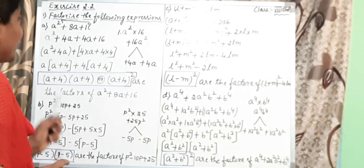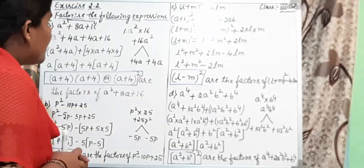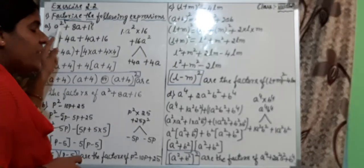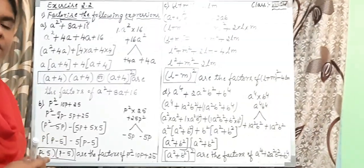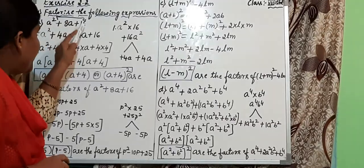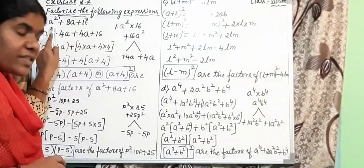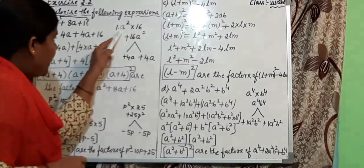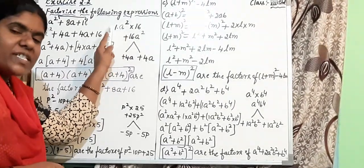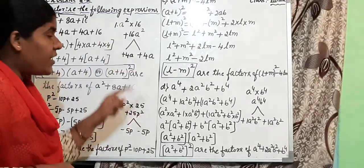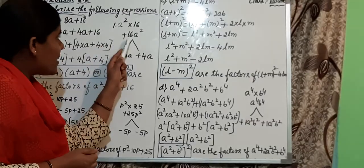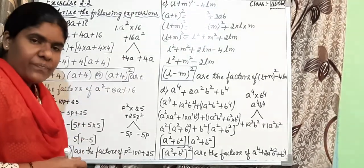Observe carefully children. Here some algebraic expressions are given; using these expressions you find out the factors. The first question is a² plus 8a plus 16. Here how many terms are there? 3 terms. Step 1: first you multiply the first term into the third term. The first term is a² and the third term is 16. Every time the coefficient of a² is 1. You multiply the constants: plus into plus is plus, so 16 ones are 16a².